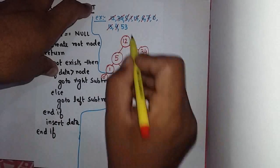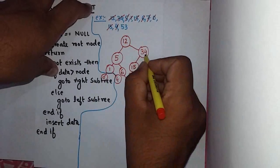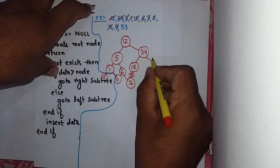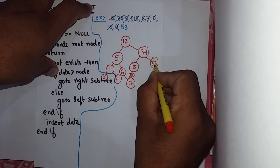53 is greater than 12 and greater than 34, so it will come here.